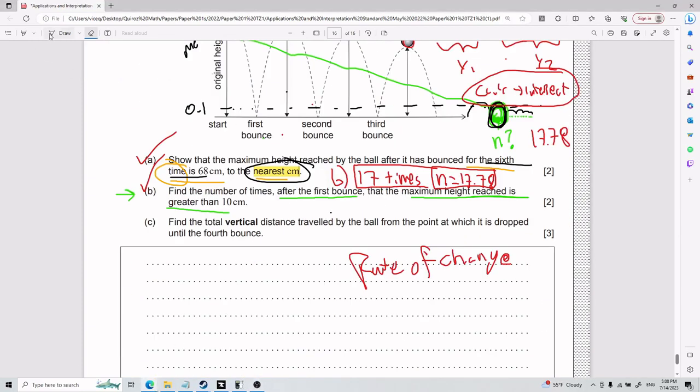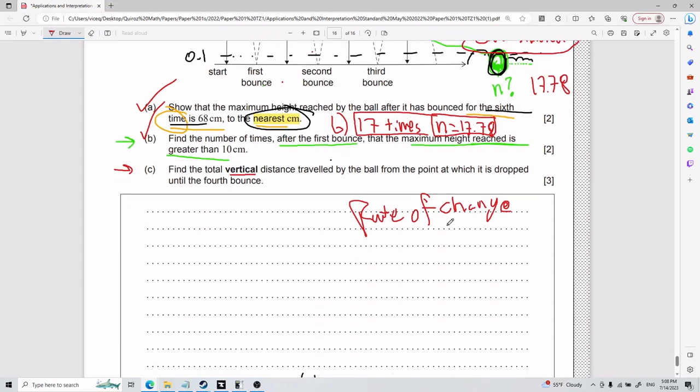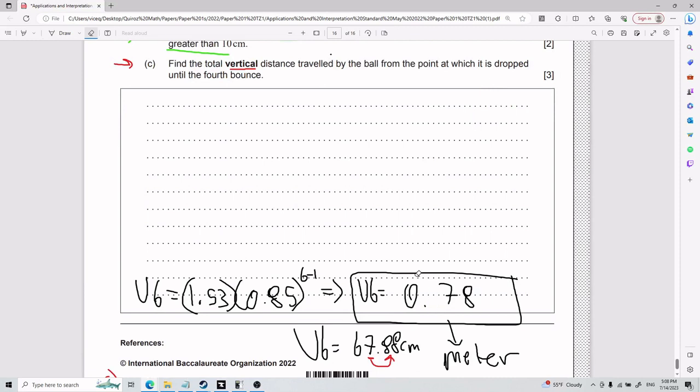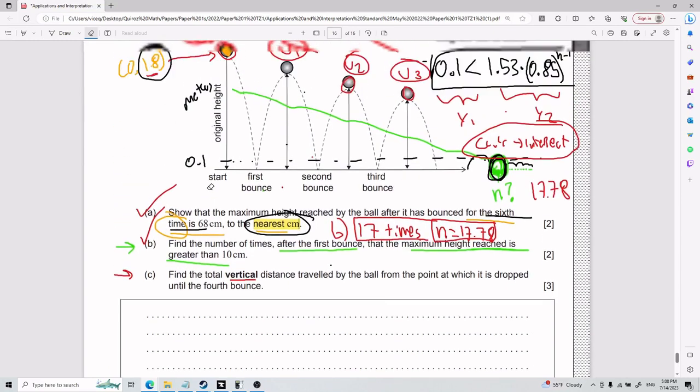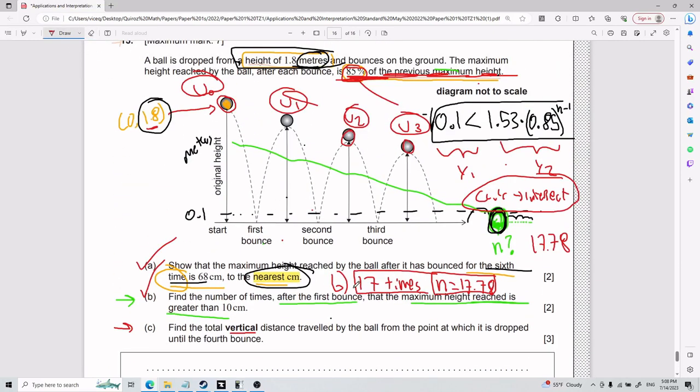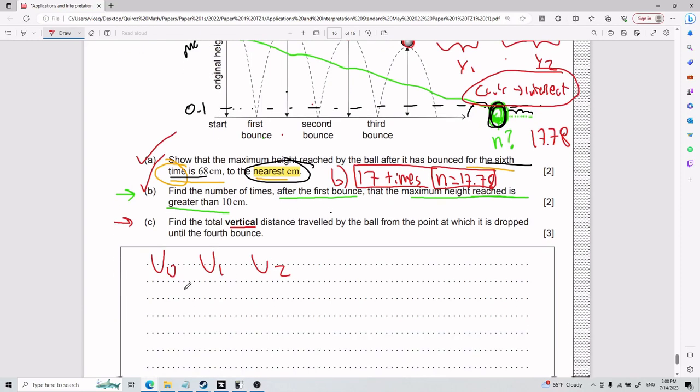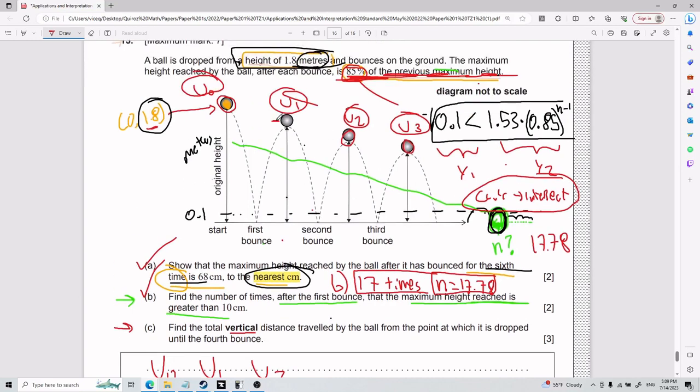Alright. Now, for part c, probably the hardest one. We have to find the total vertical distance traveled by the ball from the point at which it is dropped until the fourth bounce. Alright. So, let me just make some space because we are going to need it. Now, let's really dig into like the heart of this problem. Okay? So, on one side, okay, you have your terms that you plug in. U0, U1, etc. And then you have like what each term represents. So, what the term represents is the total height. It's always going to give you the maximum height after that bounce.